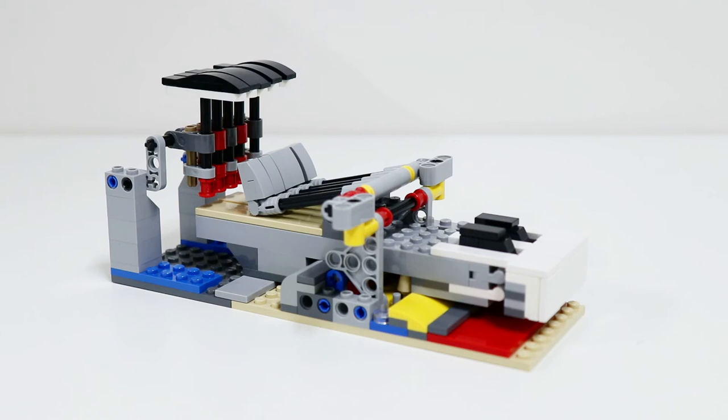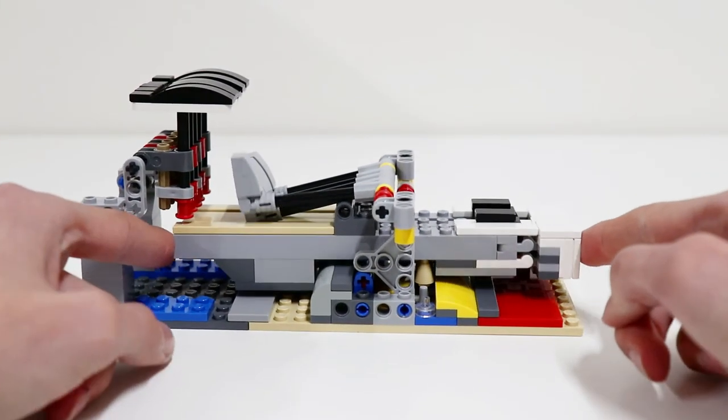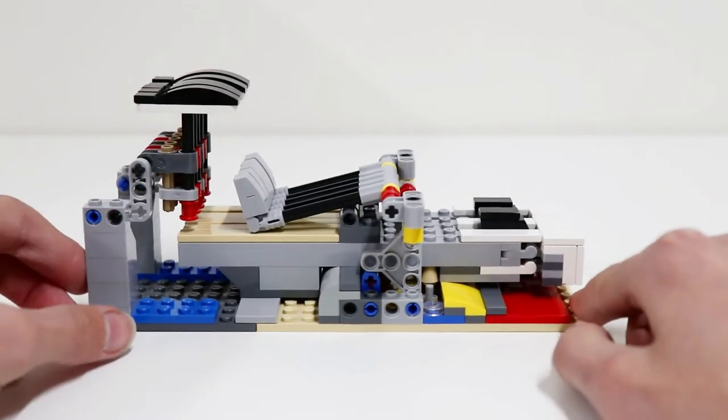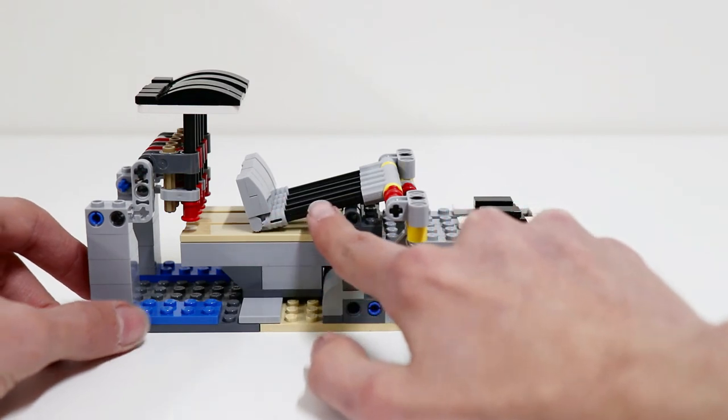The piano itself is made up of three main elements. You've got the key itself which is mostly brick built, then the hammer element, and the dampener which goes over the top. I'll show you guys how these all work together. It is truly an incredible model.